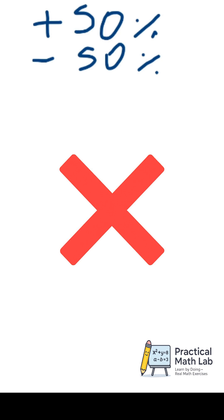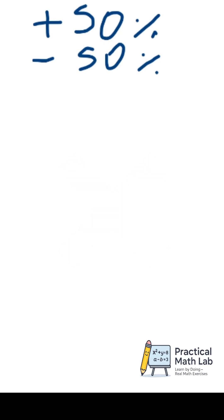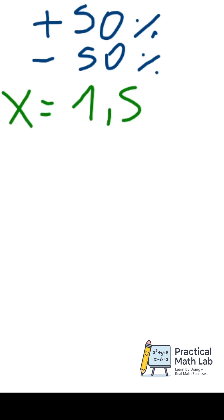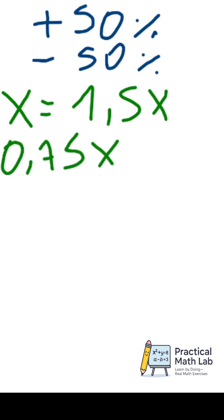Increasing and then decreasing by the same percentage doesn't bring you back to the same number. If the initial number is x, and it was increased by 50%, it became 1.5x. And now, if it's decreased by 50%, just divide 1.5 by 2, so it becomes 0.75x.